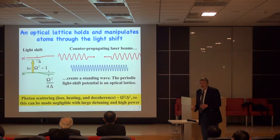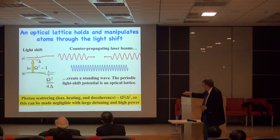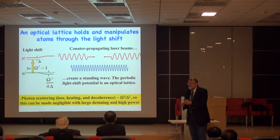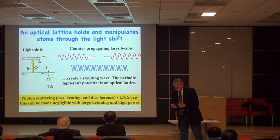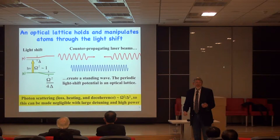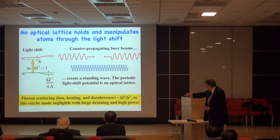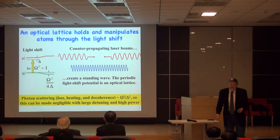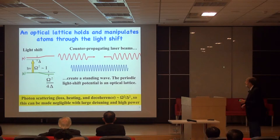The light shift goes as the square of the Rabi frequency divided by the detuning, while the scattering rate goes as intensity divided by the square of the detuning. So by increasing detuning while increasing intensity proportionally, the light shift stays constant but the scattering rate decreases as one over the detuning. This means we can have very little light scattering in our optical lattice.